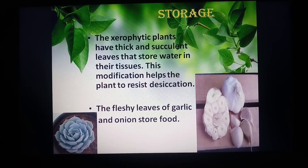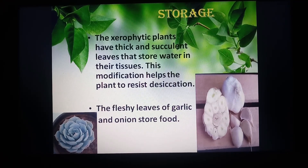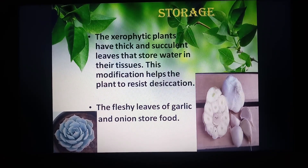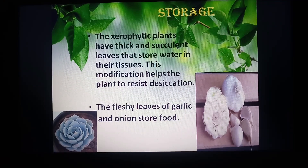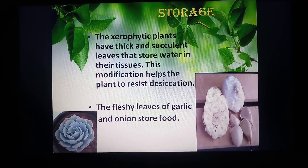First we will see modification of leaf for storage. Certain plants like xerophytic plants — plants which exist in extremely dry climatic conditions — store water. These plants have succulent leaves so that they can store water, and to avoid desiccation, the leaves are thick and fleshy. Certain plants also have modified leaves to store food; examples are garlic and onion. Examples of xerophytic plants are cactus and opuntia.